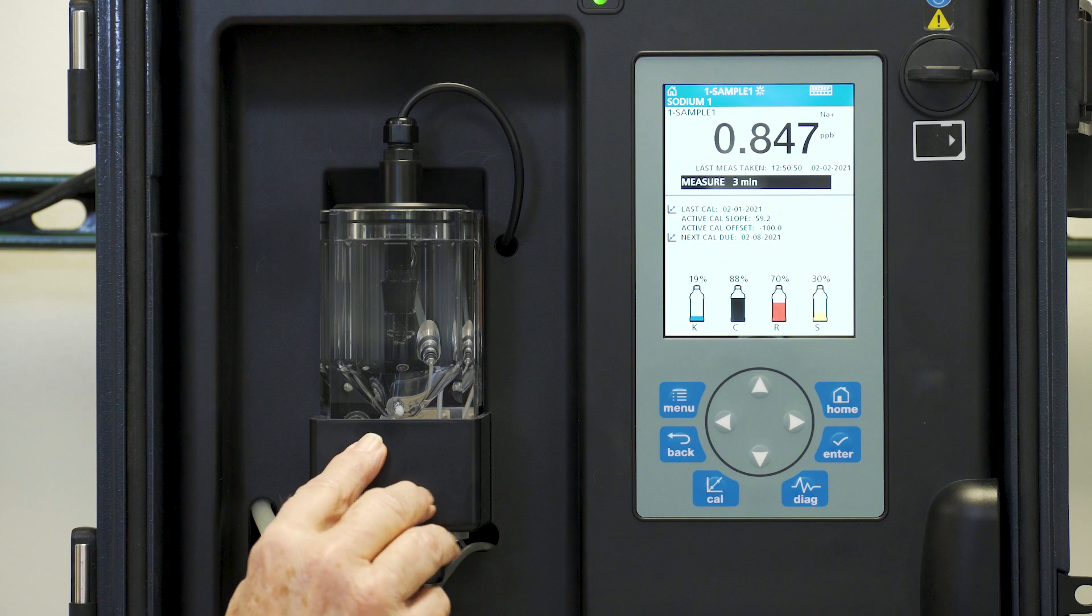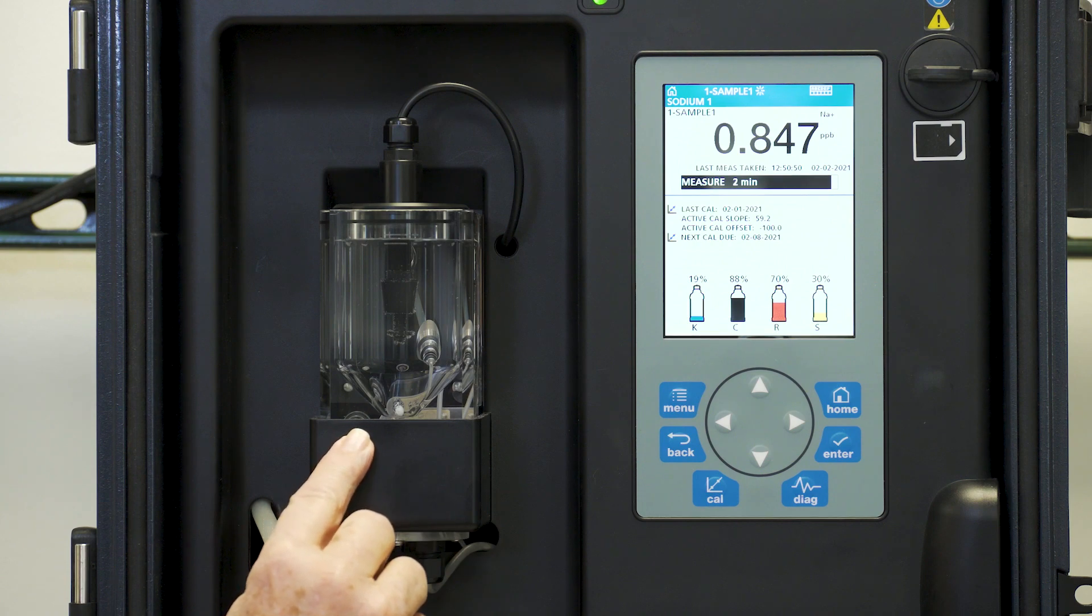Let's move on to the demonstration. The NA5600 allows you to do a grab sample for both an unknown sample or for a standard for verification. The measurement takes place in this overflow cell and then it's measured by the sodium electrode. It's a very simple setup.